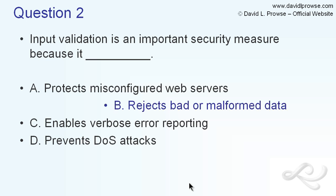By rejecting bad or malformed data, we mean stopping someone who is trying to insert code — someone trying to do an XSS attack or something of that nature. Bad or improper code. You want your PHP pages, CGI pages, or whatever other pages your forms run off of to properly validate this code and make sure people can't add unauthorized additional input.